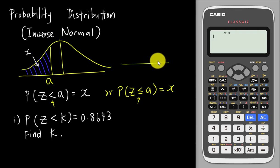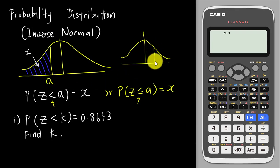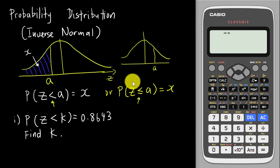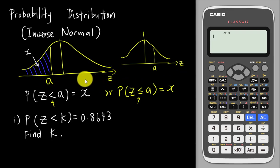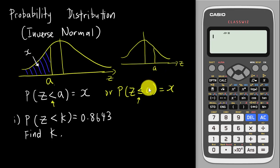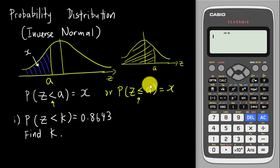You also need to understand the bell shape diagram. The a value doesn't necessarily have to be on the negative side — it can be anywhere. Another thing to pay attention to: this horizontal axis may be a Z-axis or an X-axis — it is not always a Z-axis. When it is a Z-axis (standard score) and your a value is at a certain point, the area you input must be the area from negative infinity up to a — that is, P(Z < a).